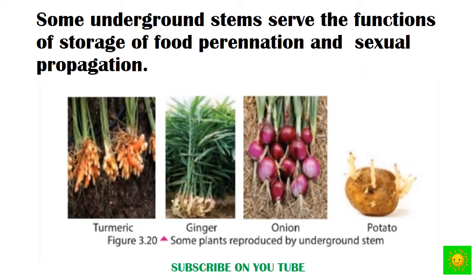Some underground stems serve the function of storage of food and vegetative propagation during adverse seasons. The aerial parts get destroyed, but the underground stem survives. During favorable seasons, new sprouts come out from the underground stem using the stored food. Examples of plants reproduced by underground stems include turmeric, ginger, onion, and potato.